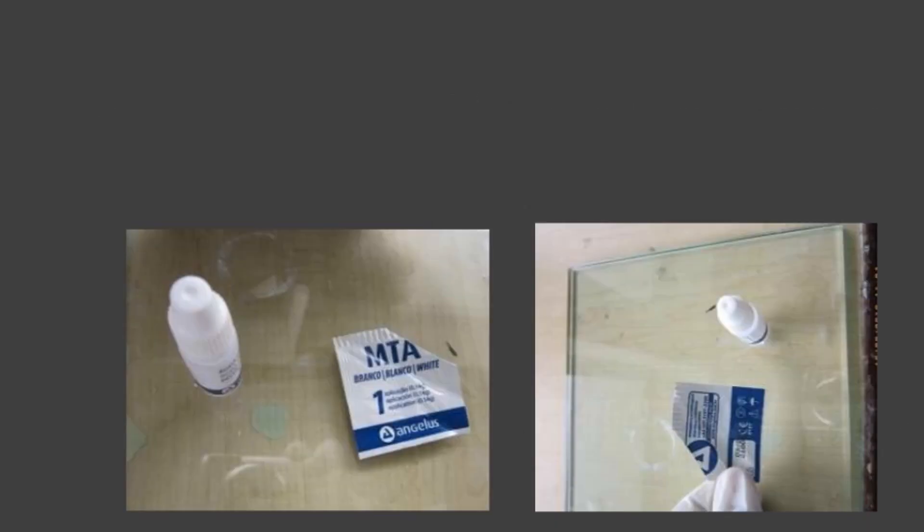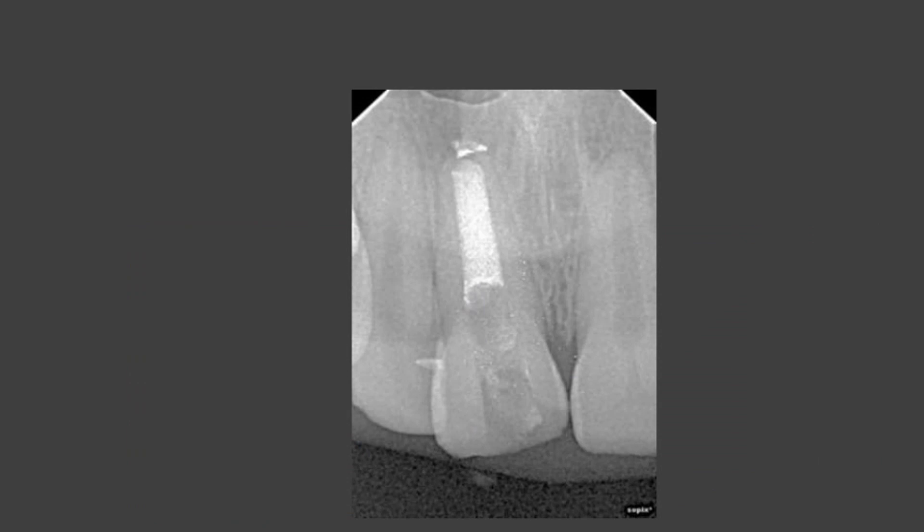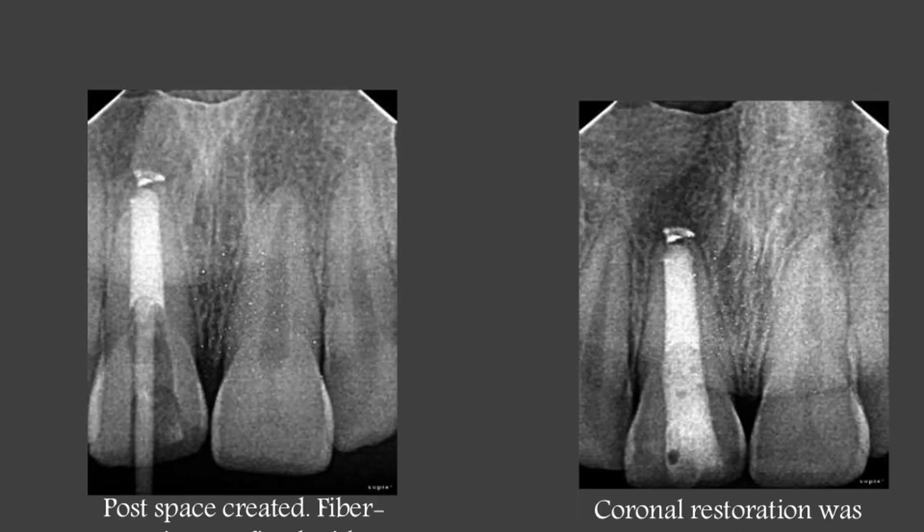Followed by post and core. After four months, removal of calcium hydroxide from the canal was done. MTA dispensed on a glass slab. IOPAR of 11 showing obturation done by MTA. Post space was created. Fiber optic post fixed with flowable light-cure composite; coronal restoration was built up with light-cure composite.